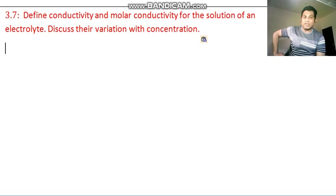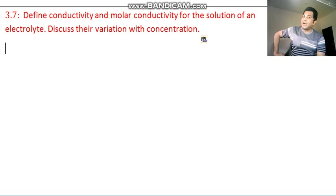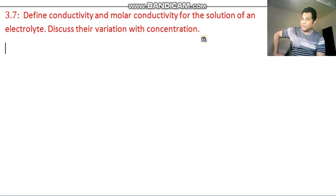Now, molar conductivity: conductivity which depends on the ions — ionic conductivity which depends on the concentration — such conductivity is known as molar conductivity. Its symbol is lambda M, and its unit is S cm⁻¹ mol⁻¹. These two definitions should be in your homework.